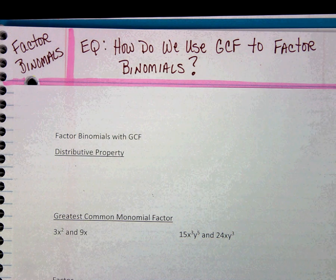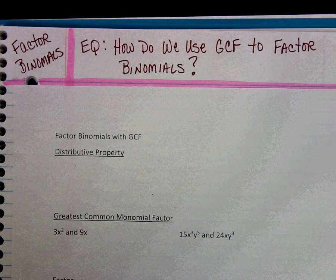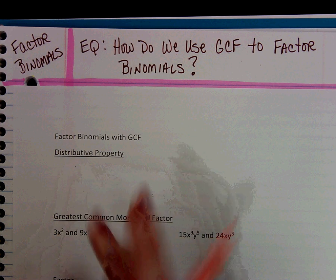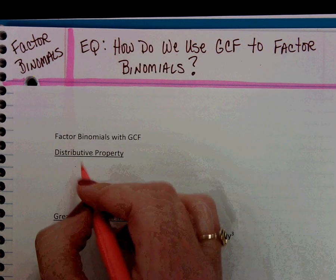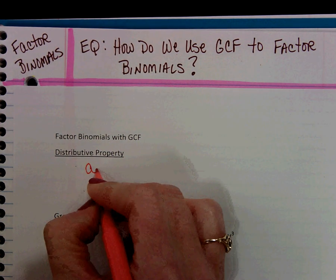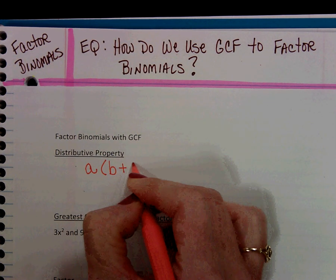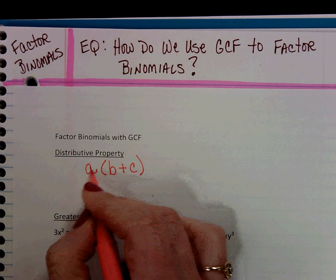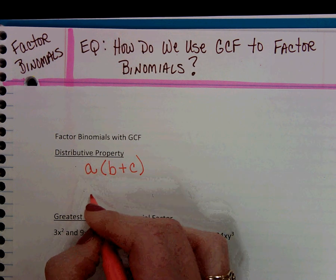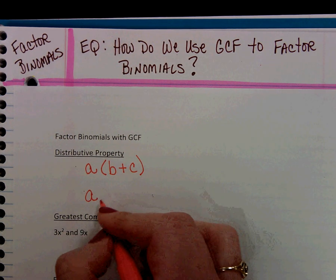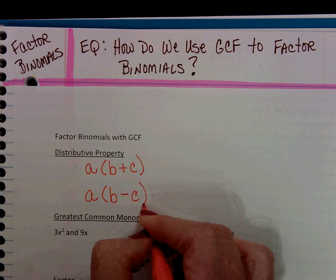The first thing I want to remind you of is our distributive property. Remember the distributive property says that if I have a number times a sum, and it doesn't have to be a number, a number or a variable, or a number or a variable times a difference.